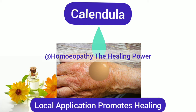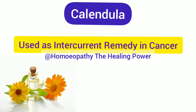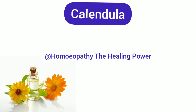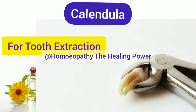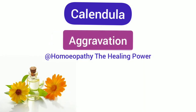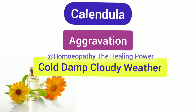Other symptoms of Calendula: It is used in cases of cancer as an intercurrent remedy. It is also used for constitutional tendency to erysipelas. Because of its excellent hemostatic property, Calendula is used after tooth extraction — it not only prevents excessive bleeding after extraction but also promotes healing and prevents pus formation.